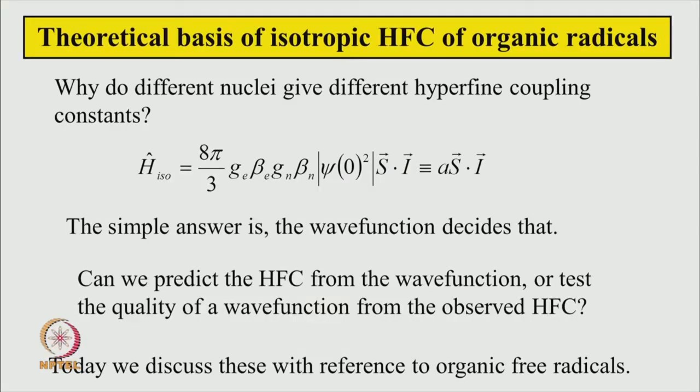In this series of lectures, we have seen many EPR spectra. We have analyzed some of them and measured the isotropic hyperfine coupling constant for some of the spectra. We found the values are different for different nuclei. So today we are going to ask this question: why do different nuclei give different hyperfine coupling constants? What is the theoretical basis for isotropic hyperfine coupling constants?